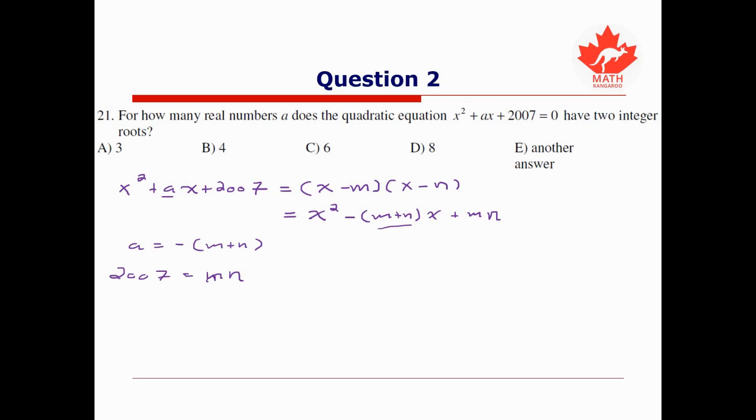If I try and match coefficients on both sides of this equation, we find that a = -(m + n) and 2007 = mn. So if I have distinct integer roots, their product has to be 2007. That really limits our cases. We should only look at factors m and n which multiply to give us 2007.